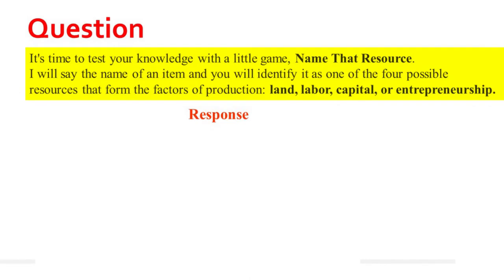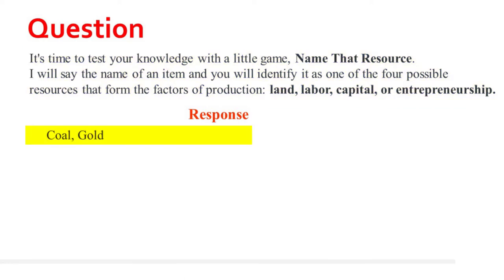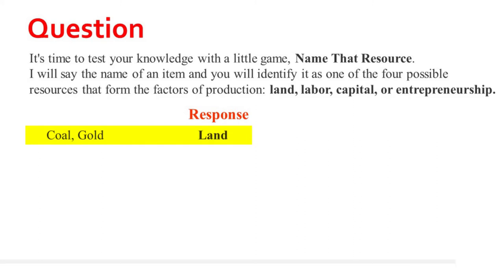It is time to test your knowledge with a little game called Name That Resource. I will say the name of an item and you will identify it as one of the four possible resources that form the factors of production: land, labor, capital, and entrepreneurship. Coal or gold? If your response is land, then you are correct.